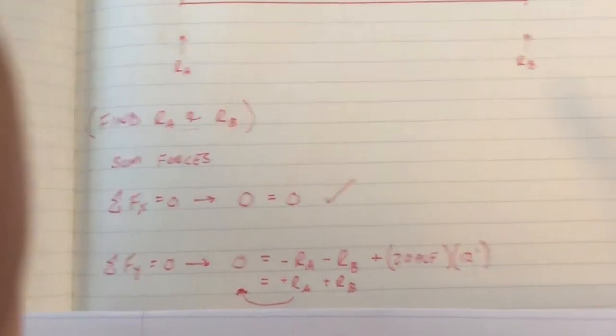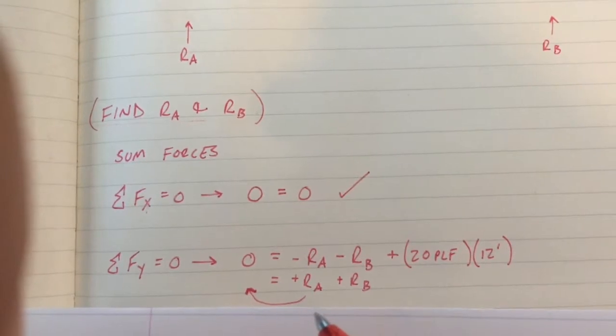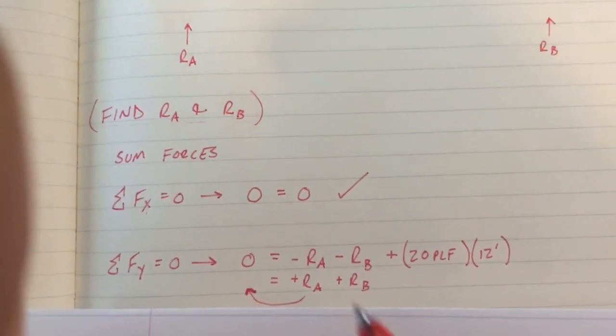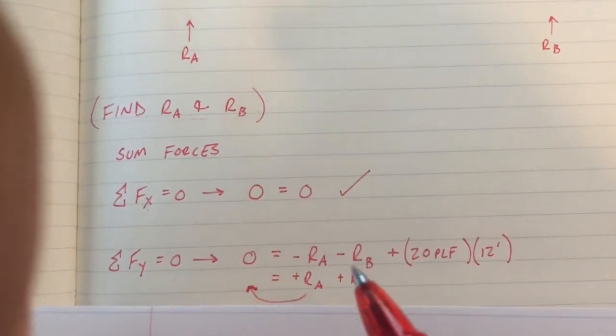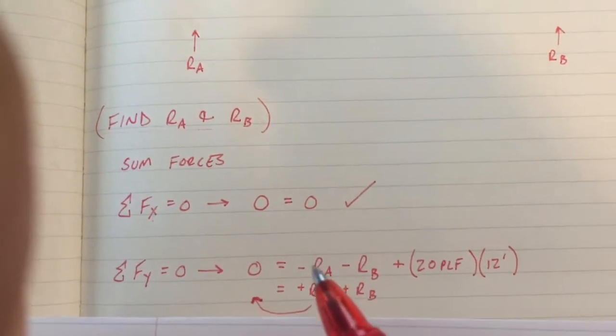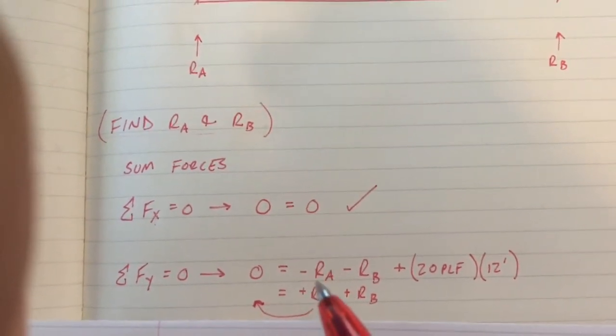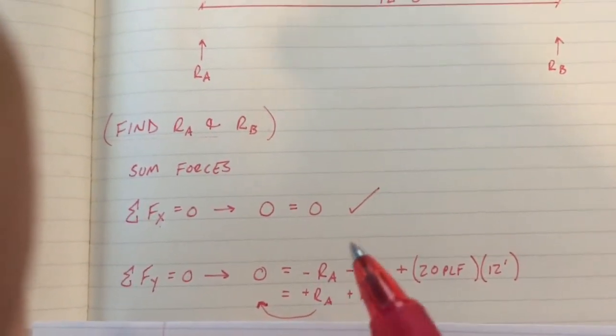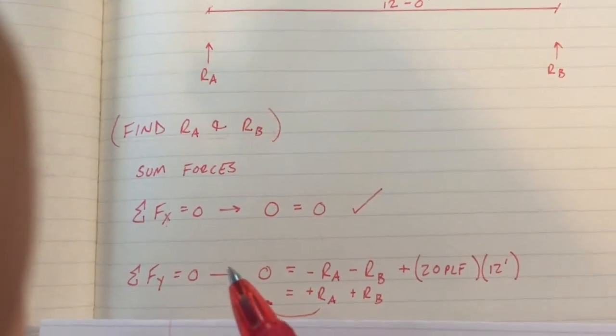Now we can start to balance. I want to get my reactions on one side of the equation. By doing that, you need to take the opposite sign in order to carry it across to the other side of the equal sign.